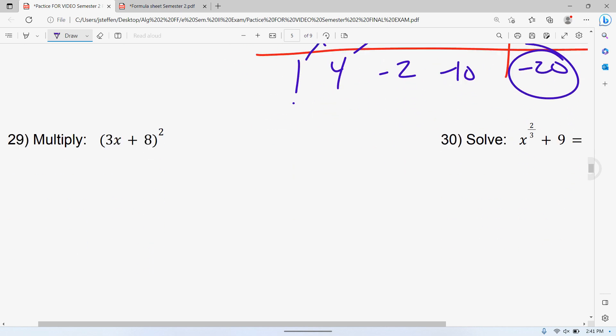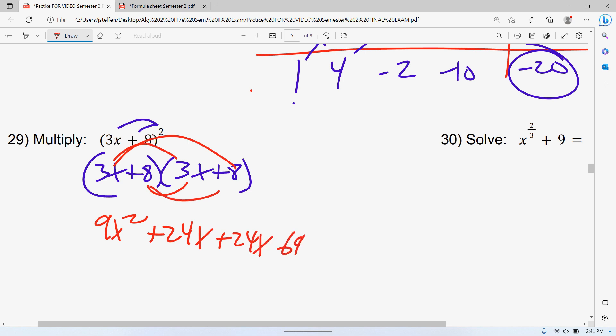29, do yourself a favor and actually multiply by distributing. So 3x times 3x is 9x squared. 3x times 8 is 24x, and 8 times 8 is 64. Combine to get 9x squared plus 48x plus 64.